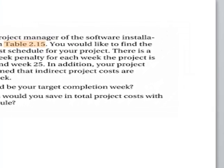There's another question on crashing. This is problem 25 in chapter 2, one of your homeworks. It says you are the project manager of the software installation project in table 2.15, which I'll show you shortly. You would like to find the minimum cost schedule for your project. There is a $1,000 per week penalty for each week the project is delayed beyond week 25, and the indirect costs are $2,500 per week.